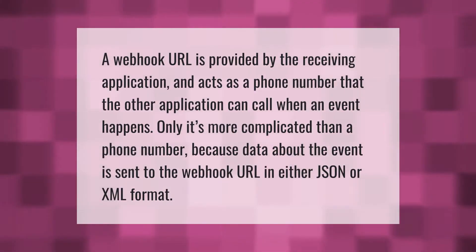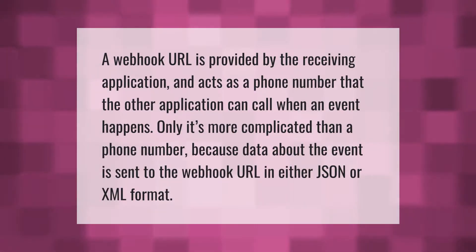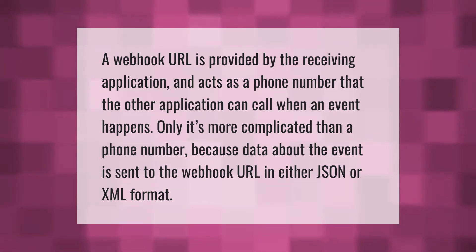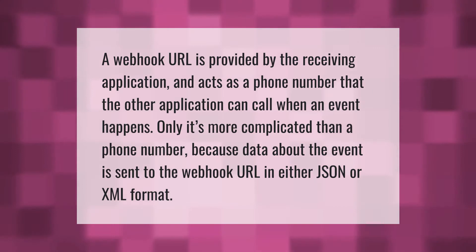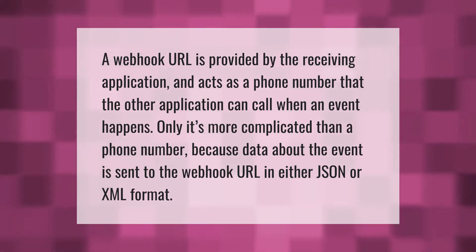A webhook URL is provided by the receiving application and acts as a phone number that the other application can call when an event happens. It's more complicated than a phone number because data about the event is sent to the webhook URL in either JSON or XML format.